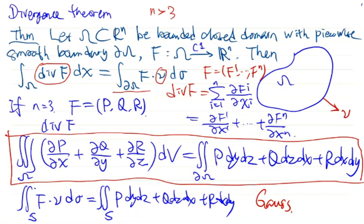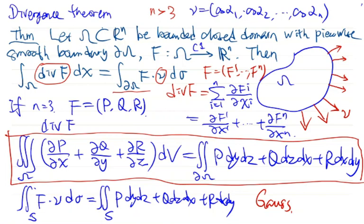Note that in the divergence theorem, ν is the outward unit normal vector at every point on the boundary of ω. You can denote this unit vector by (cos α₁, cos α₂, ..., cos αₙ), where α₁, α₂, ..., αₙ are the angles between ν and the coordinate axes. In the three-dimensional case this gives precisely P dy dz + Q dz dx + R dx dy, confirming that the Gauss formula is the three-dimensional case of the divergence theorem.